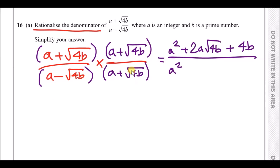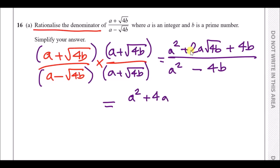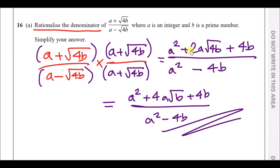Expanding the top: a × a = a², a × √(4b) gives a√(4b), and again a√(4b), so 2a√(4b) altogether, plus √(4b) × √(4b) = 4b. On the bottom: a² and the middle terms cancel, leaving a² minus 4b. Tidying up — √4 = 2, so 2 × 2 = 4 — gives (a² + 4a√b + 4b) over (a² − 4b).